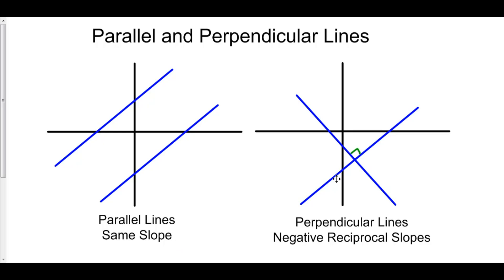Perpendicular lines do intersect at one point. However, that intersection is extremely specific — they intersect at a 90-degree angle. Because of this intersection, they have negative reciprocal slopes.